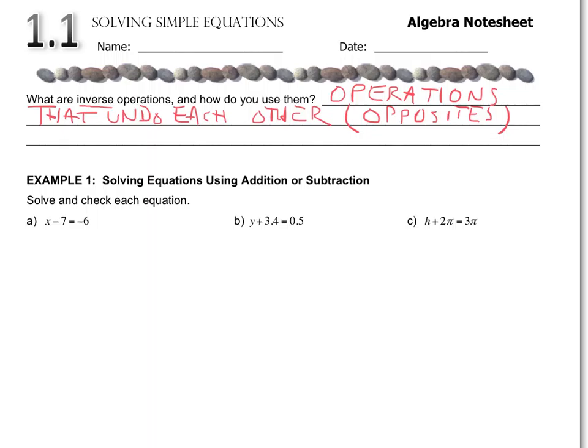For example, can you name two operations that are opposites? If you think about adding, the opposite of adding is subtracting. The opposite of multiplying — and we'll be using a dot more often this year than an x — the opposite is dividing. We really won't use the division symbol much either; we'll be using the fraction bar, which is another way of dividing. So multiplying and dividing, adding and subtracting, are both considered inverse operations of each other.